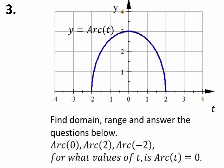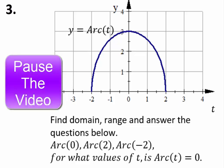Let's see what you can do with this next function. Be very careful what dependent and independent variables you're working with. Here the independent variable is t and the dependent variable is y. Y is dependent on t, and they're related with the function arc of t. The function name in this case is not just one letter but the word arc. t is the left-right movement; y is the up-down movement. Be careful in how you answer the questions. Pause the video, find domain and range, then answer the questions.